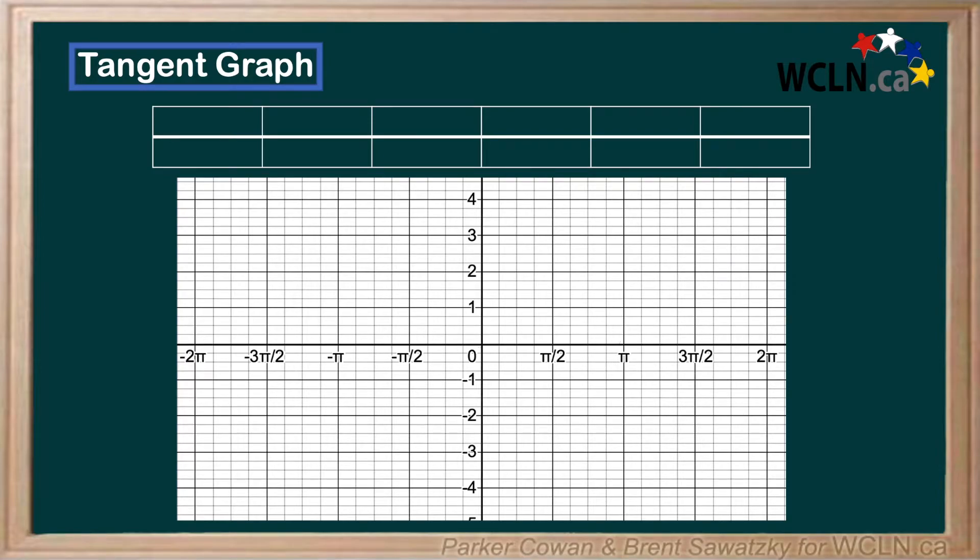0 and pi were equal to 0, and pi over 2 and 3 pi over 2 were imaginary, which means we draw asymptotes at those points on the x-axis.